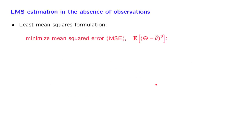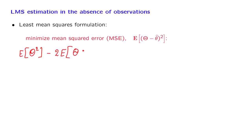Let us now look at this formulation and see how we can solve it. This is a function of a single variable, theta hat, and we can try to minimize it using conventional methods. To carry out this minimization, let us first expand this expectation into a sum of terms. We have the expected value of the square of the random variable, then a cross term of minus 2 times the expected value of theta, times theta hat. However, theta hat is a number that we're trying to choose — it's not random. Therefore, we can pull it outside the expectation. And similarly, the last term, the expected value of theta hat squared, is just theta hat squared itself.